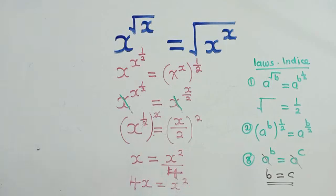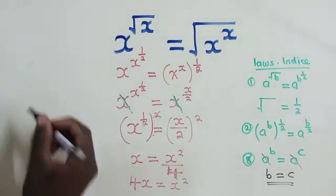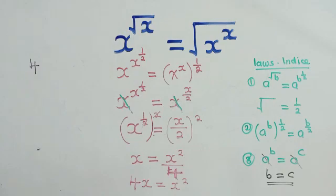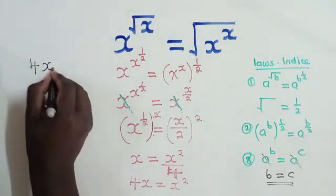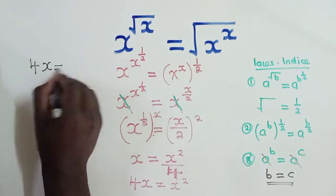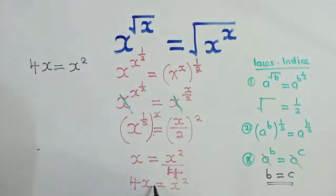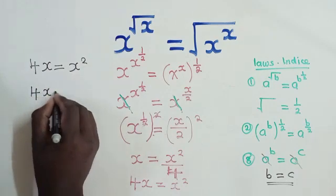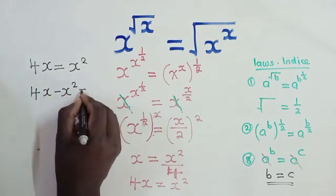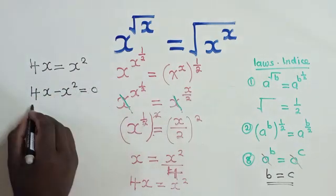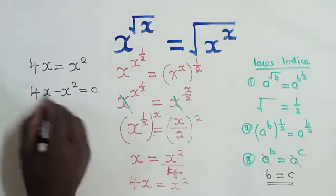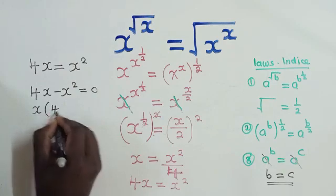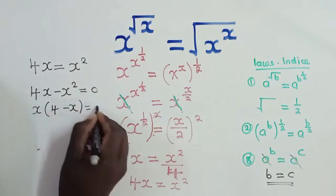We cross multiply. We shall have 4X is equal to X power 2. So we have a quadratic equation there. Let's put it in standard form. So we shall say 4X minus X squared is equal to 0. I'm just putting it in standard form. So we factor out what is common, that's X. We shall remain with 4 minus X is equal to 0.